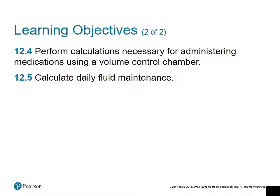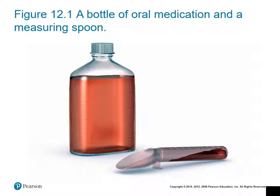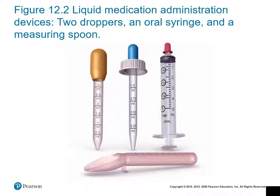When administering medication to children, oral administration is preferred. However, if the child is younger, say under five years old, it will be very difficult for them to swallow a tablet or capsule, so you would provide the medication in a liquid form like an elixir, syrup, or suspension. You would then use an oral syringe, calibrated dropper, or measuring spoon to administer that medication.